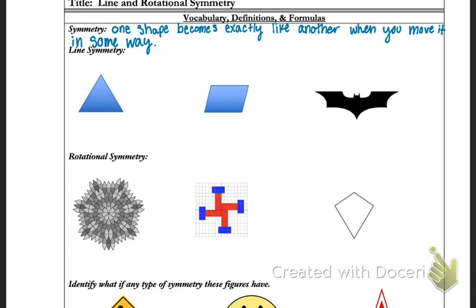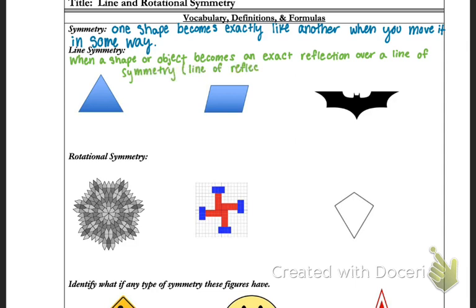We're going to be focusing on both line and rotational symmetry. Line symmetry is when the shape or object becomes an exact reflection over a line of symmetry, which we call the line of reflection. So what we have here is three examples, and I want you to look at how I might determine if there's a line of symmetry.